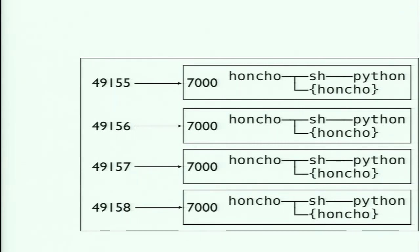From each container's perspective, Honcho is the root process. It has its own interface, its own file system, and is running on its own little server. It's the only thing running there — no init, no other daemons. It's running a single process in the same memory space with the same kernel, so it has very, very low overhead.